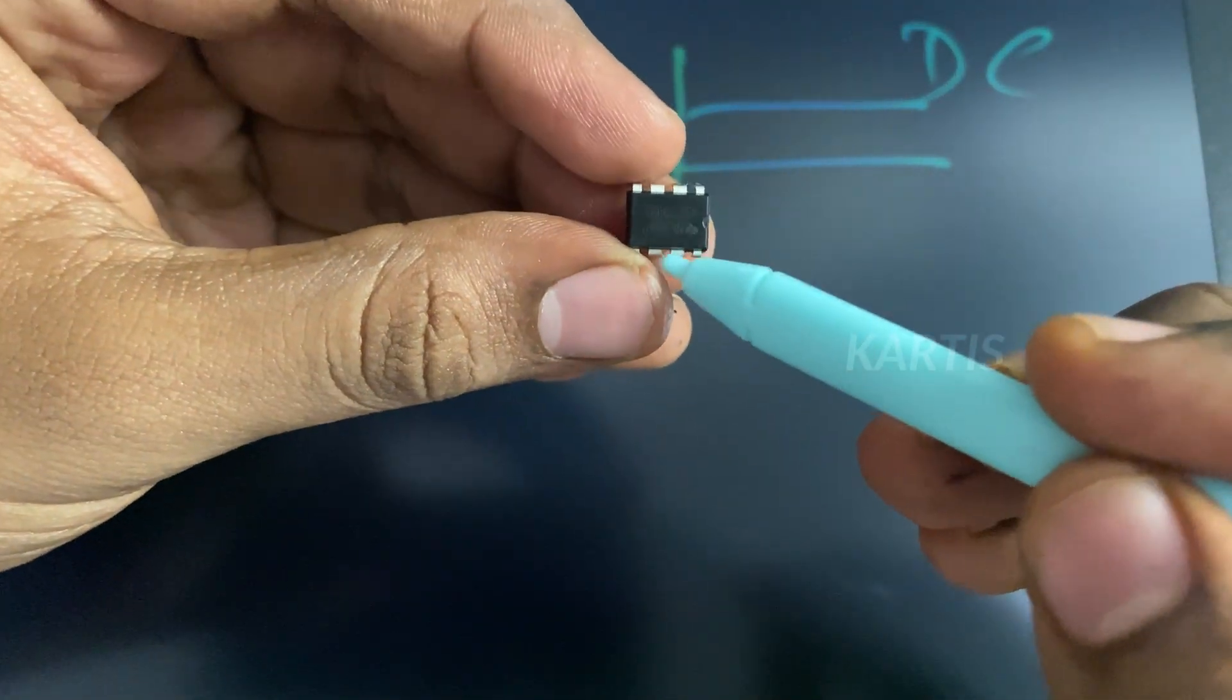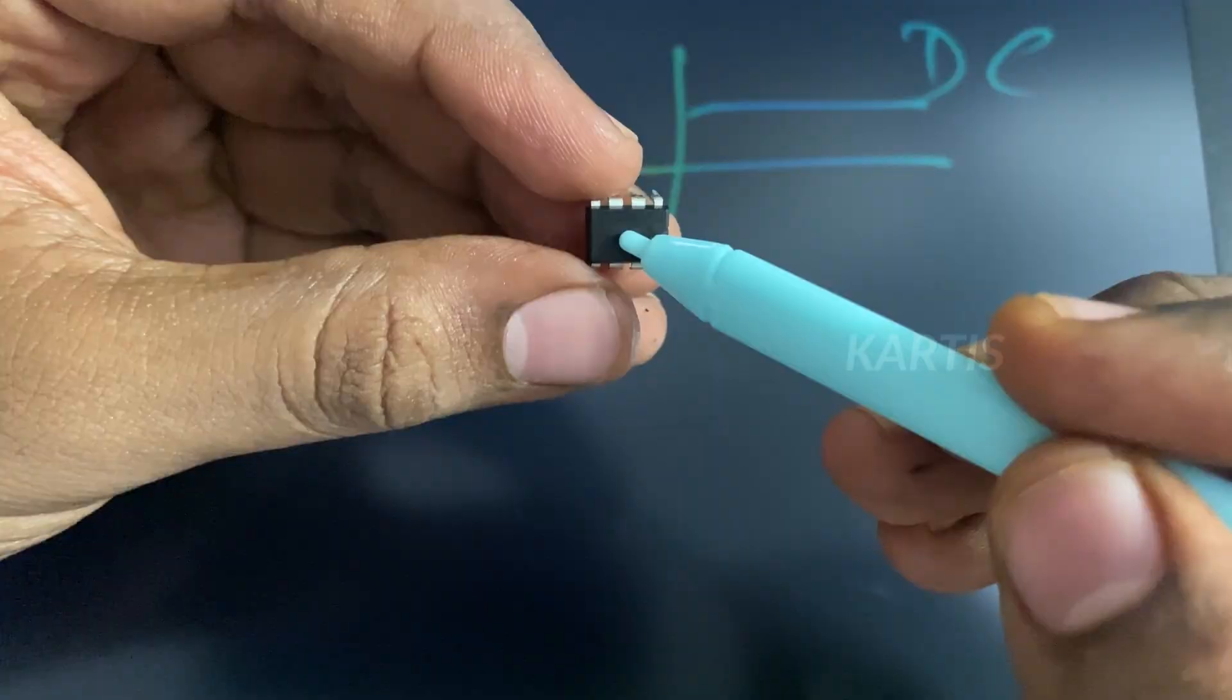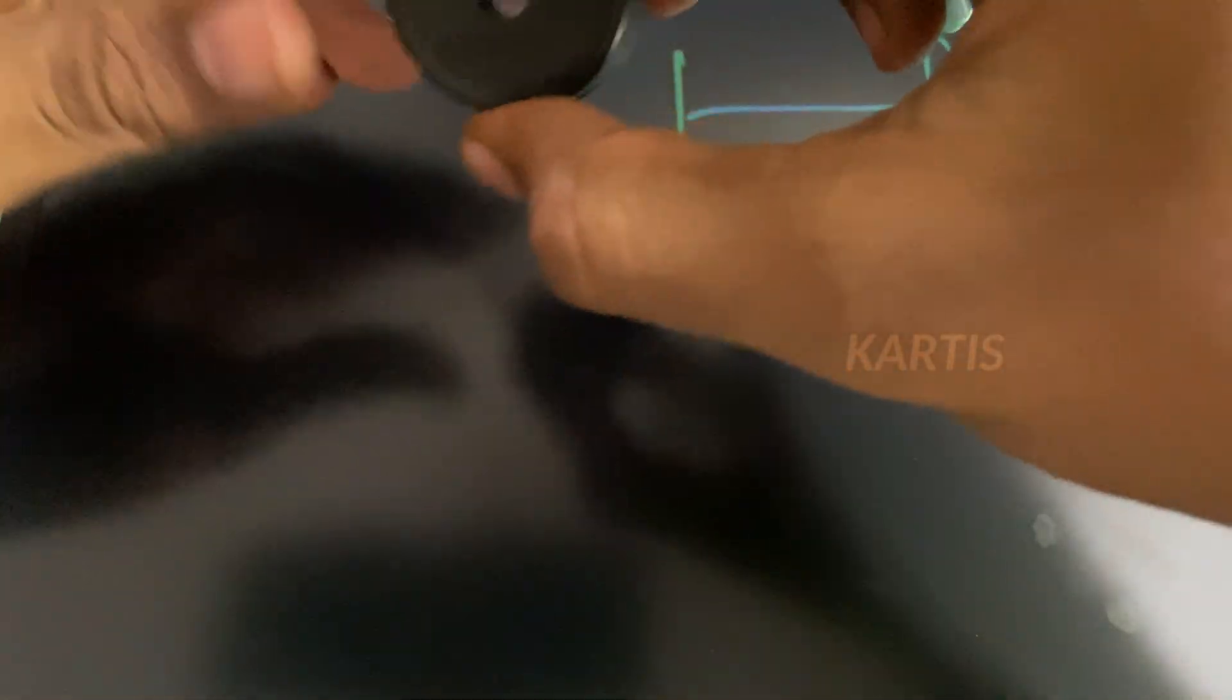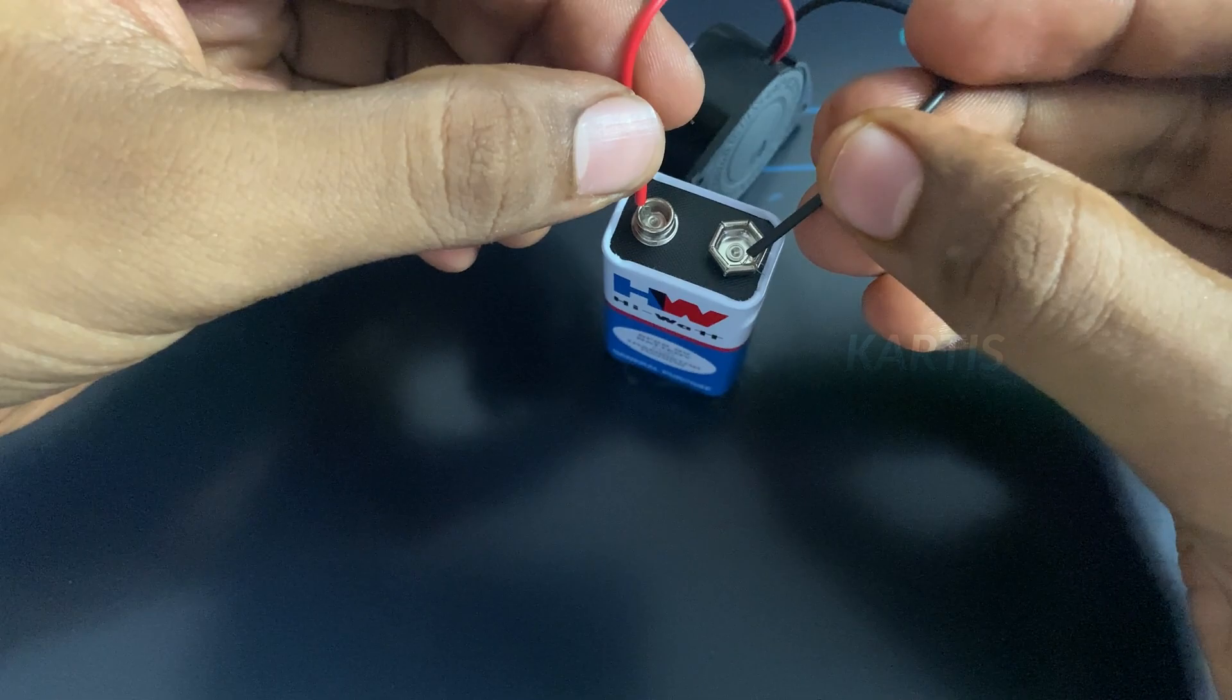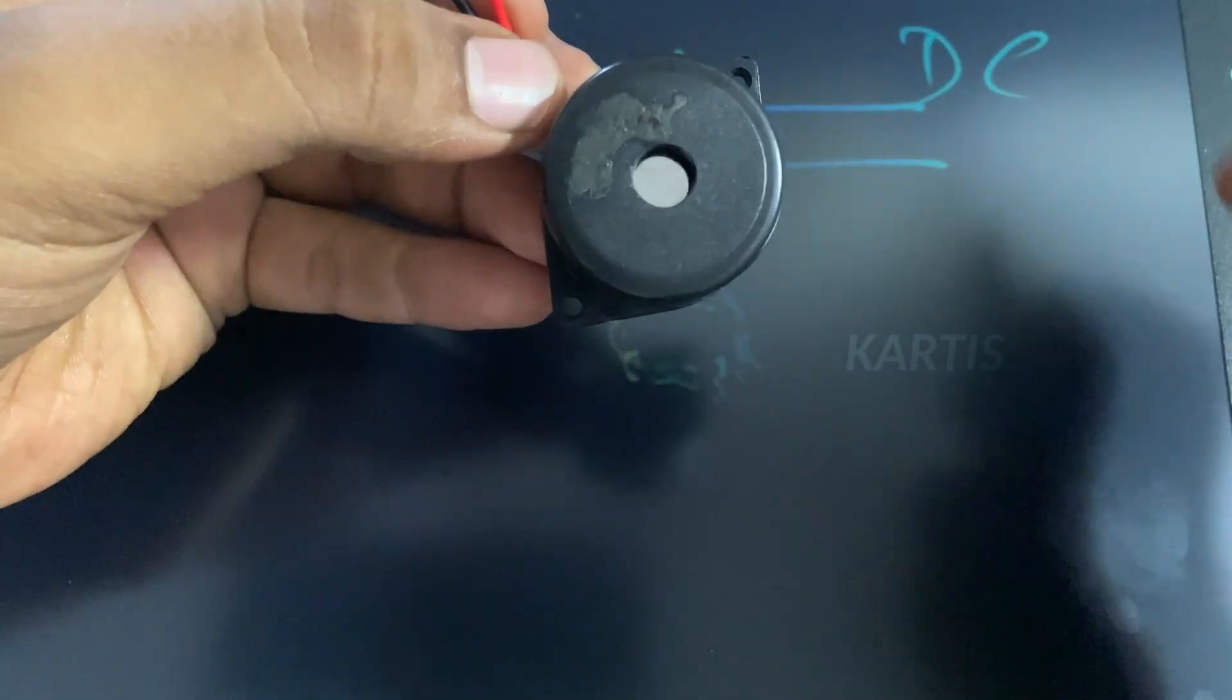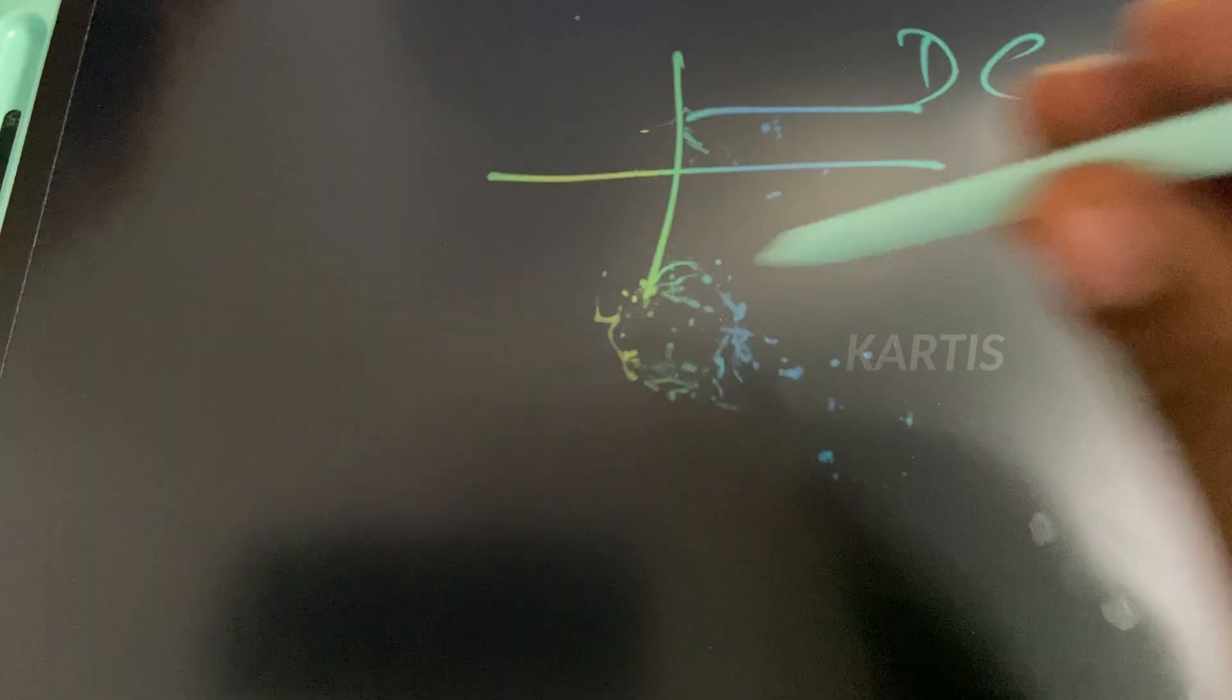We can connect resistors and capacitors to change this signal. Because of this, we can change the buzzer or speaker sound. We can tweak the sound.